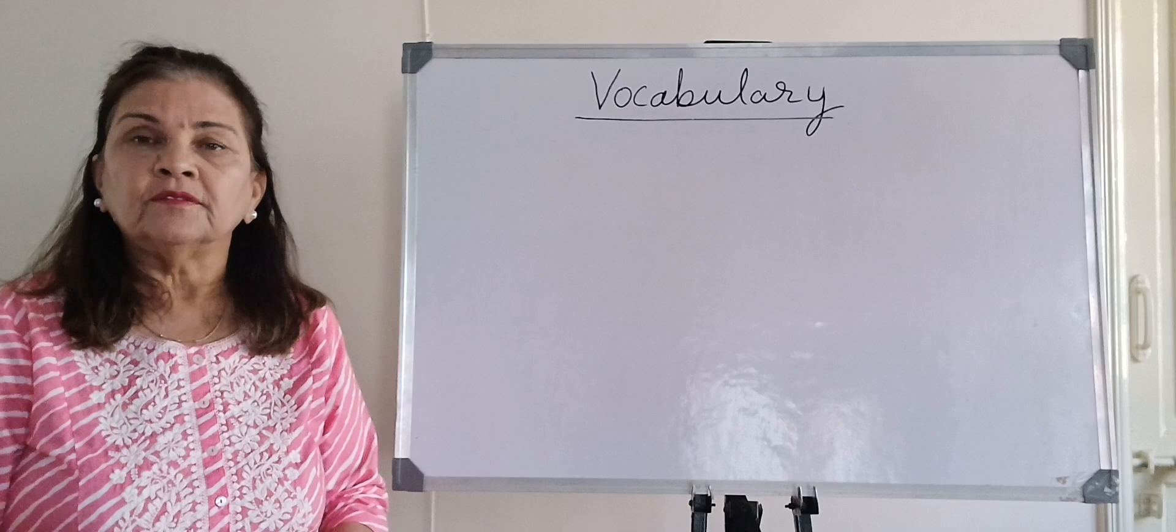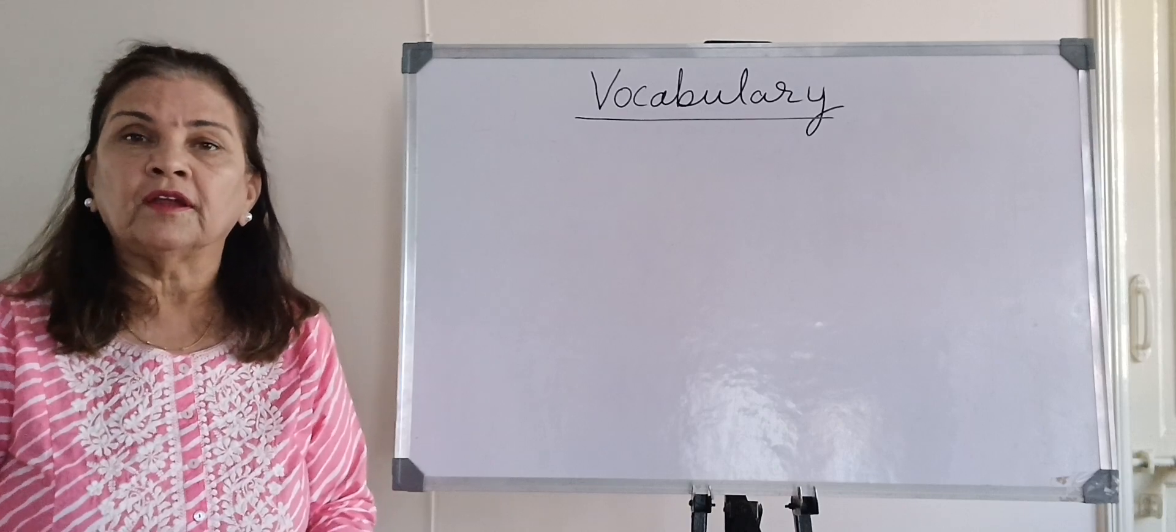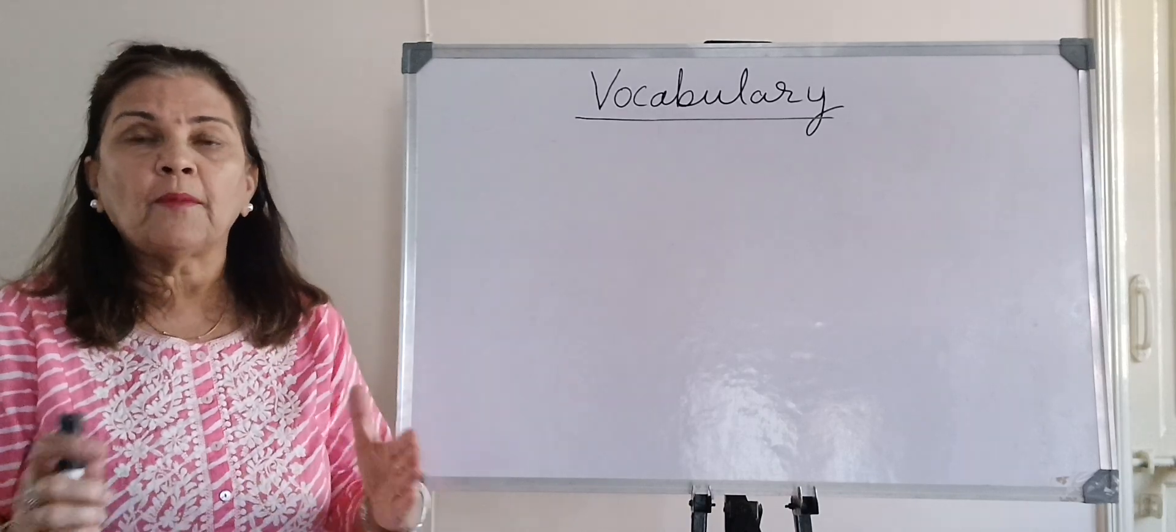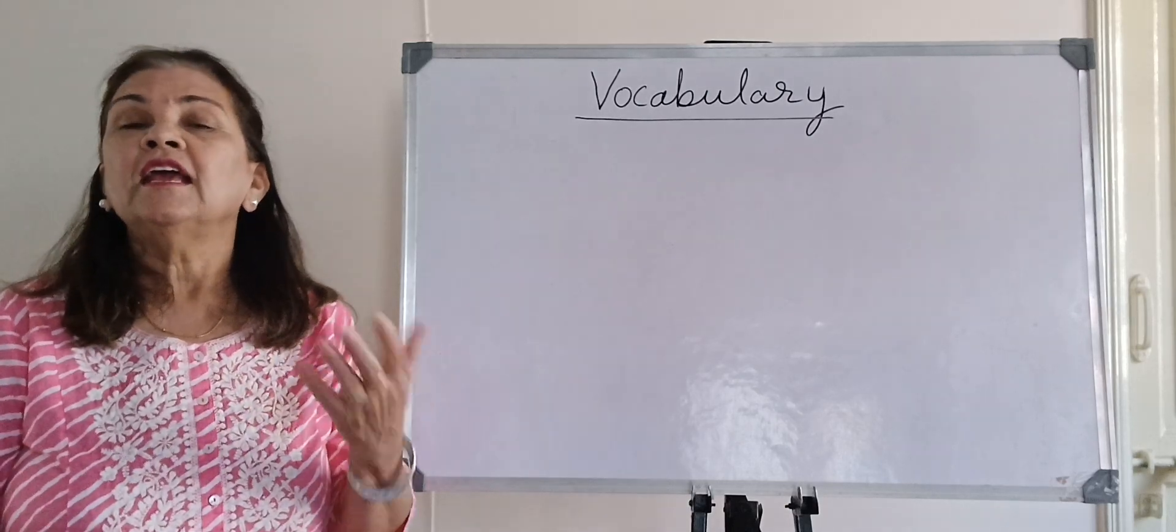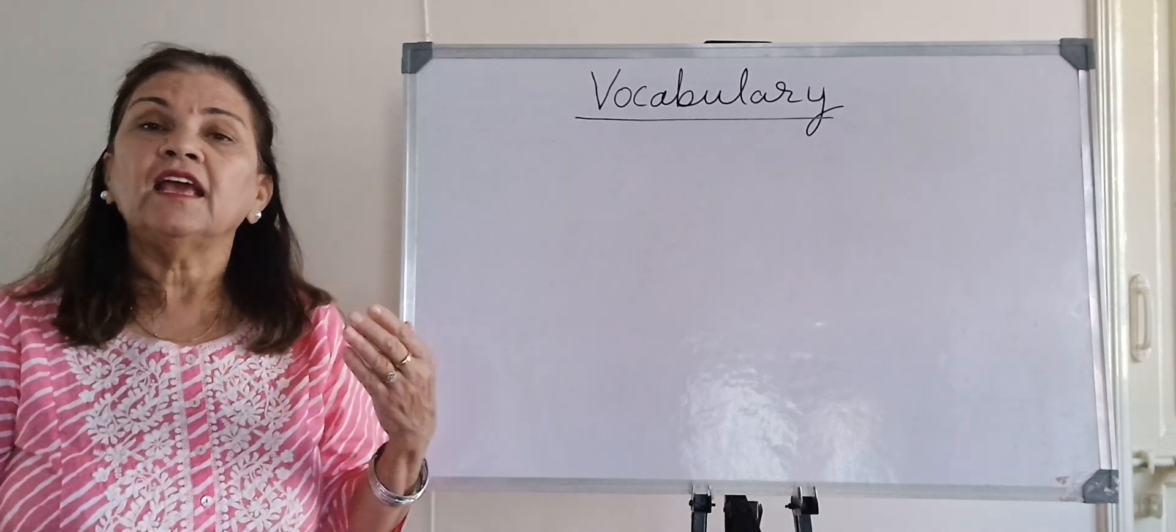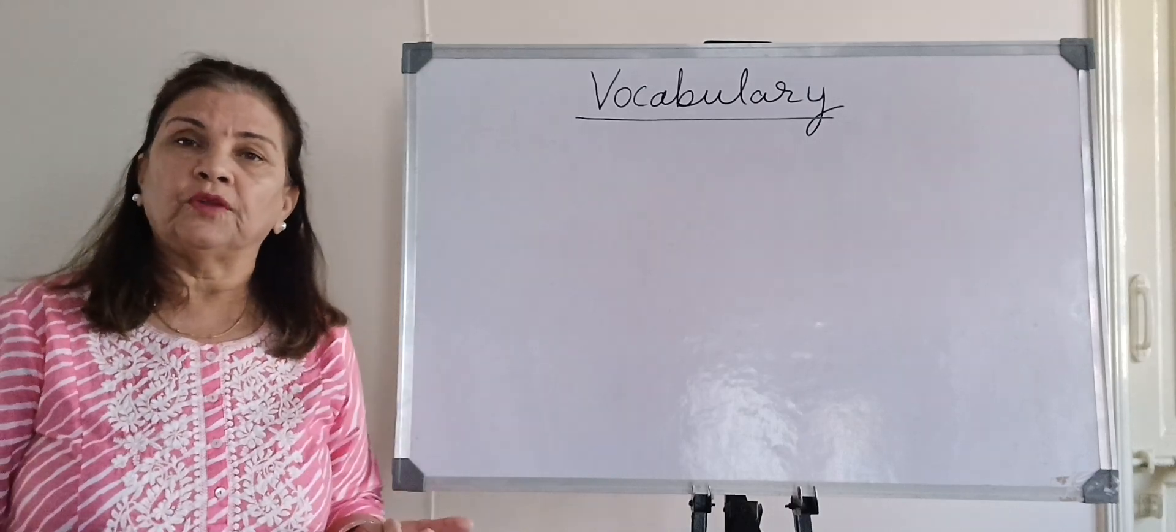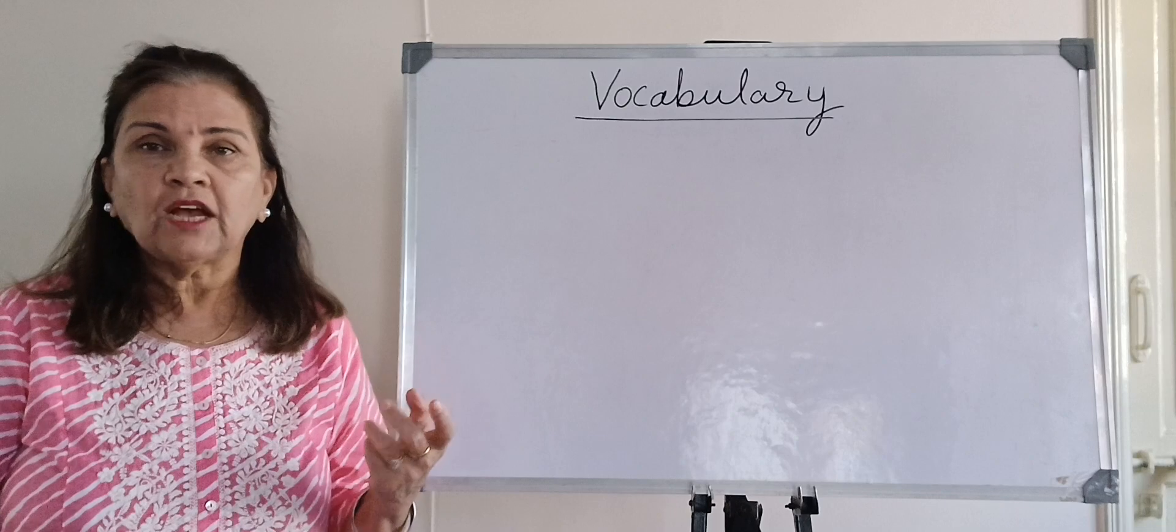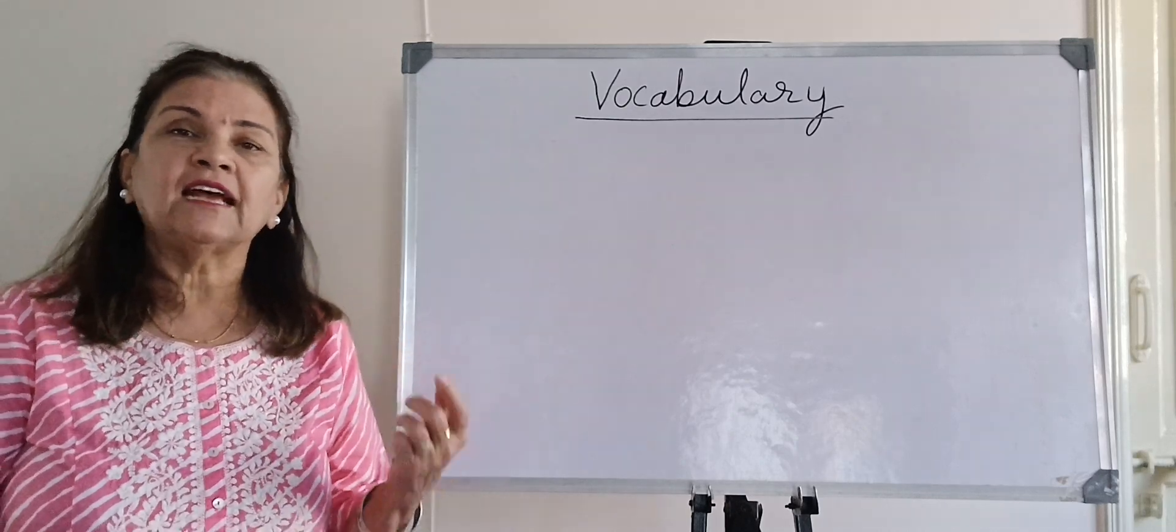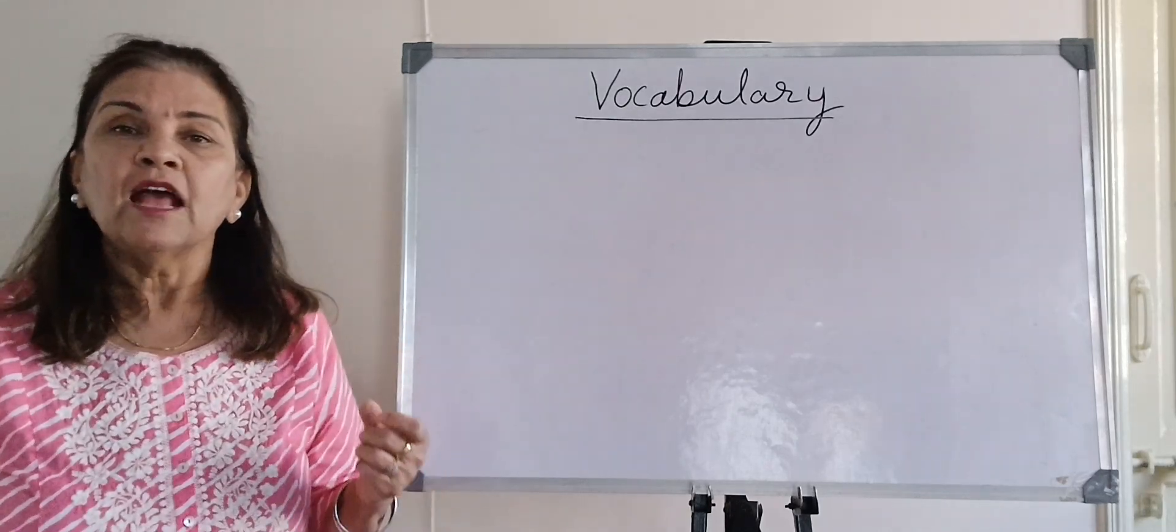Auto is a root word meaning self. Bio means life. Graphic means something written or scribbled. We understand its meaning - one's own life story is called autobiography. So it's very good if you learn the meanings of these root words.